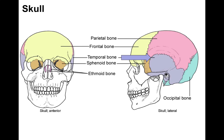The temporal bone gets its name because temporal means time — the hair overlying the temporal bone is what usually grays first, so it's called the temporal bone. The sphenoid bone is in the area where you'd massage your temples behind your orbit; that's actually the sphenoid bone. It's one bone that goes from one side of the skull to the other, forms a good part of the orbit, and is the keystone of the skull — lots of other bones attach to it.